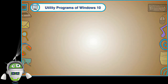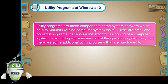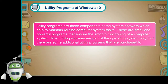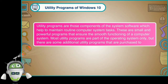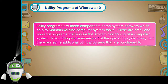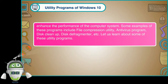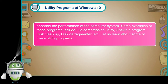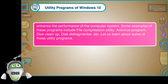Utility Programs of Windows 10. Utility programs are those components of the system software which help to maintain routine computer system tasks. These are small and powerful programs that ensure the smooth functioning of a computer system. Most utility programs are part of the operating system. But there are some additional utility programs that are purchased to enhance the performance of the computer system. Some examples include File Compression Utility, Antivirus Program, Disk Cleanup, Disk Defragmenter, etc.